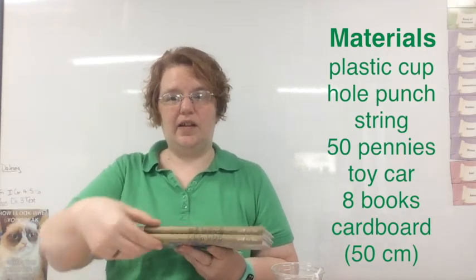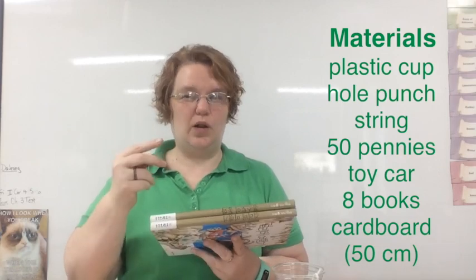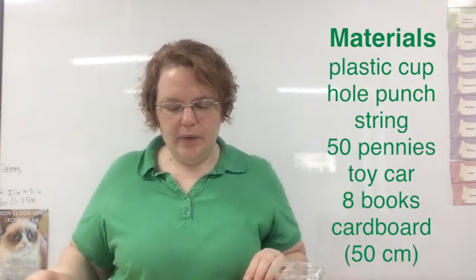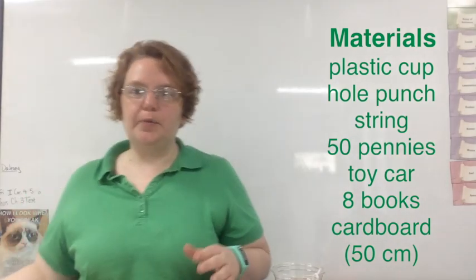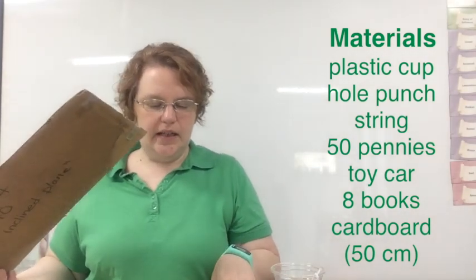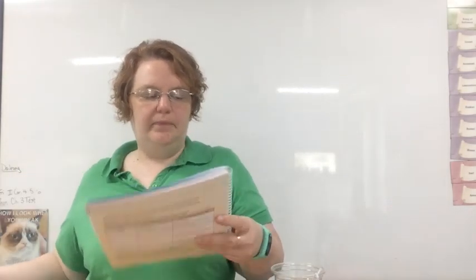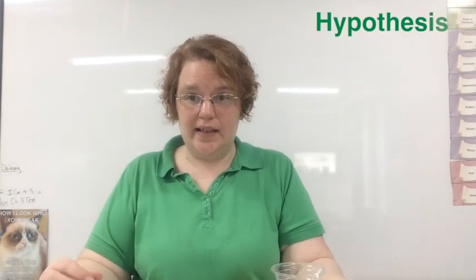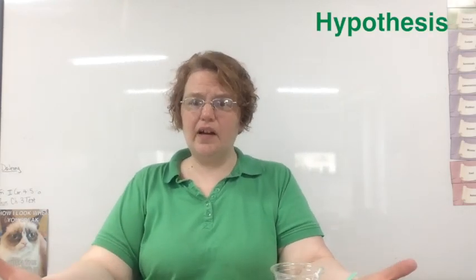And it says about eight books. Now, my books here I collected, they're really thin. So I collected about 16 of them. So we're going to say that two books equals one book in our activity. All right. And then we have a stiff piece of cardboard, which is about 50 centimeters. All right. So we have all of the parts needed to do our activity. Now we go to the next part. This is called our hypothesis.